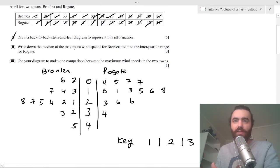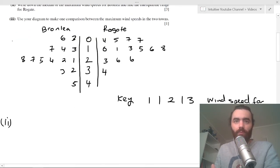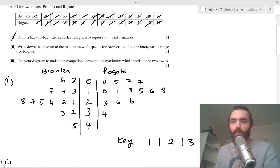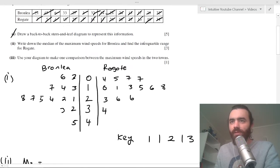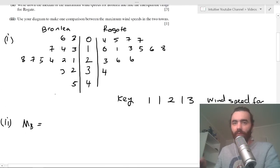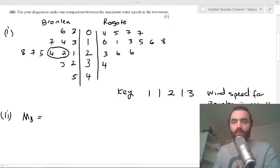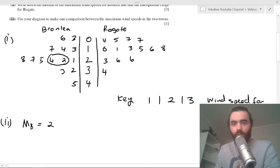So that was part i. Let's do ii. It wants you to write down the median for the maximum wind speeds of Bronley, and it also wants the interquartile range for Rogate. Well, the median of B, if there's 14 data points we can count seven in to get the middle. And remember, these are in order, so we can count it. So we've got one, two, three, four, five, six, seven, so that's our seventh value there. And we also have one, two, three, four, five, six, seven, so between these two values is the median value because you have seven on one side and seven on the other. So in between 22 and 24 is 23, so your median value is 23 kilometers per hour.